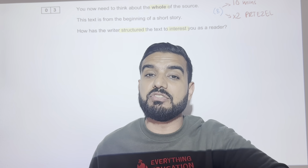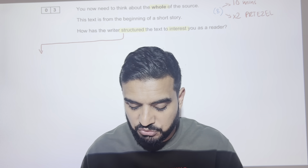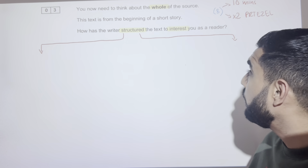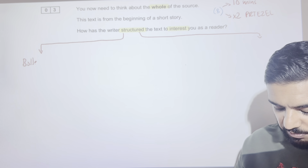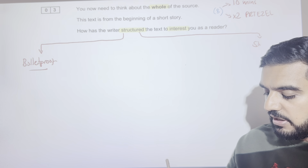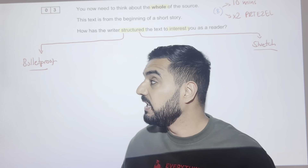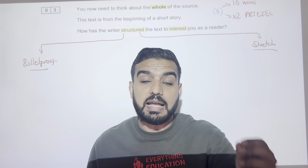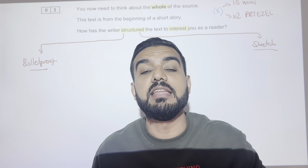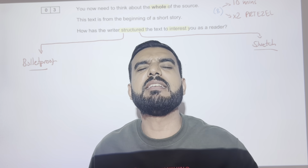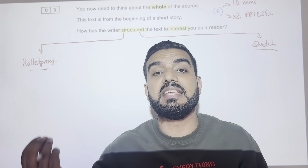We're looking at how does the writer use structure to create interest. This is where students get stuck because not enough students know structural devices. There are two types: the bulletproof list and the stretch list. For the bulletproof side, no matter what happens in your exam, these structural devices are coming up. I will give each of you a hundred pounds if they don't come up, because I know one hundred percent these eight structural devices are coming up every single year.